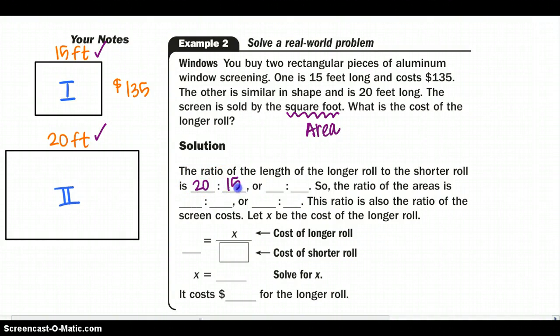The ratio of the lengths of the longer roll to the shorter roll is 20 to 15, which really gives me 4 to 3 as my ratio. The ratio of the areas, remember, all you do is square that value. So you get 16 by 9. This ratio is also the ratio of the screen's cost. So let's use that. We would say our longer roll, 16 over 9, is equal to x over 135, which they gave me.